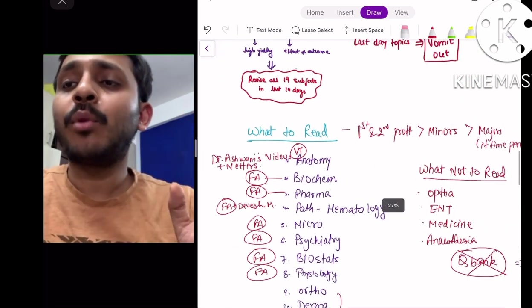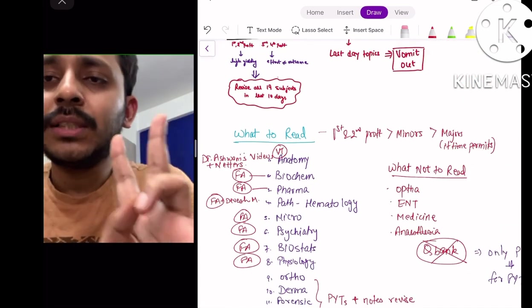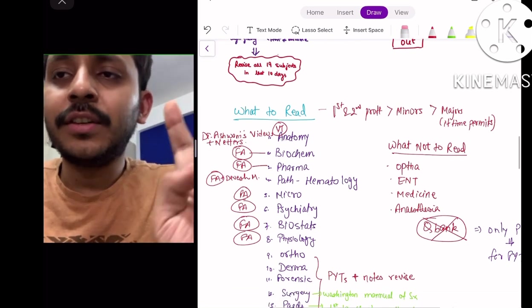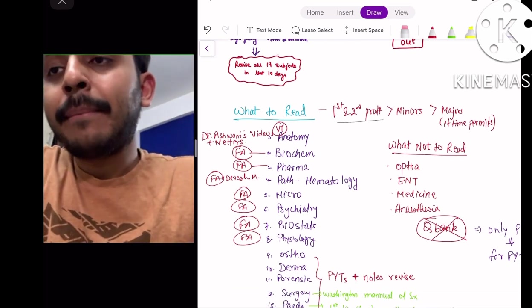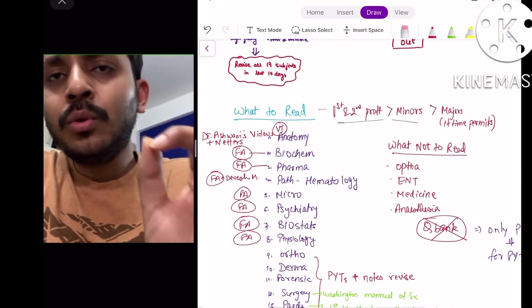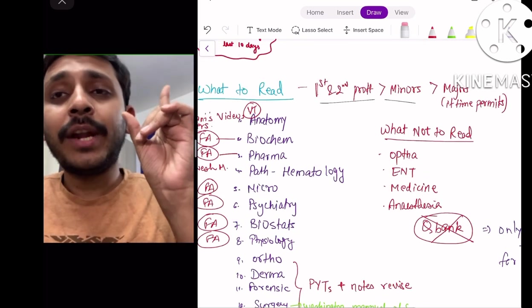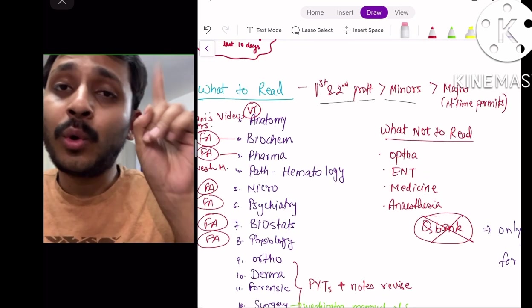Now, very important point - what to read. In these 2 months, just focus on 1st and 2nd prof followed by minors and majors. Do majors only if you have time and do it at the end. Before I tell you what to read, let me tell you what you don't have to read.